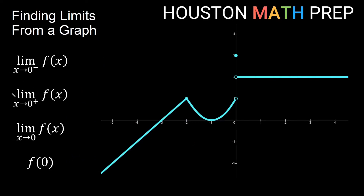Now let's look at a less well-behaved part of the graph, around x equals 0, focusing on the y axis. What is the limit as x approaches 0 from the left side, from the negative side? I'm approaching on this curvy piece, heading toward a hole at a y value of 1. So my limit from the left side is 1.